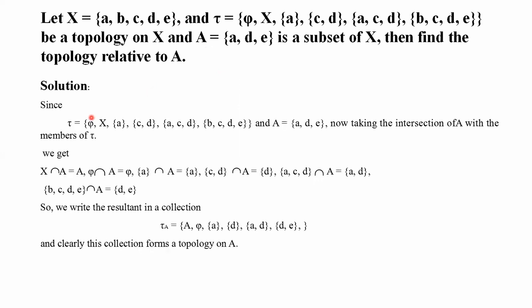سب سے پہلے ہم دیکھتے ہیں کہ τ کے ہمارے پاس کون کون سے members ہیں: φ, X, {a}, {c,d}, {a,c,d}, {b,c,d,e}۔ اور A = {a, d, e} جو کہ X کا subset ہے۔